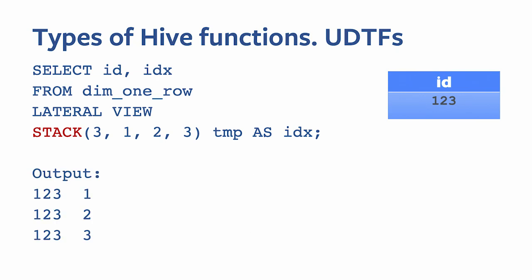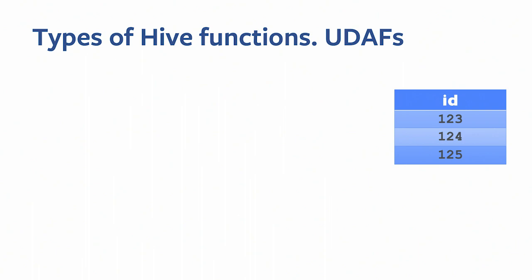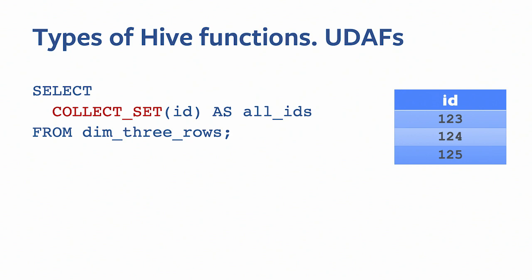The last type is user-defined aggregate function. With three rows and a query using collect_set — a user-defined aggregate function — it will combine the three rows into a single array, producing a single row as output.